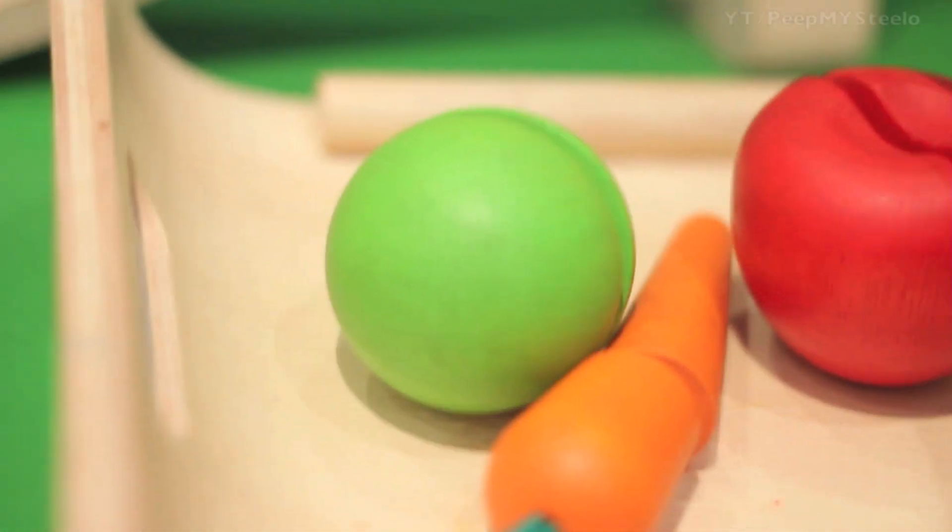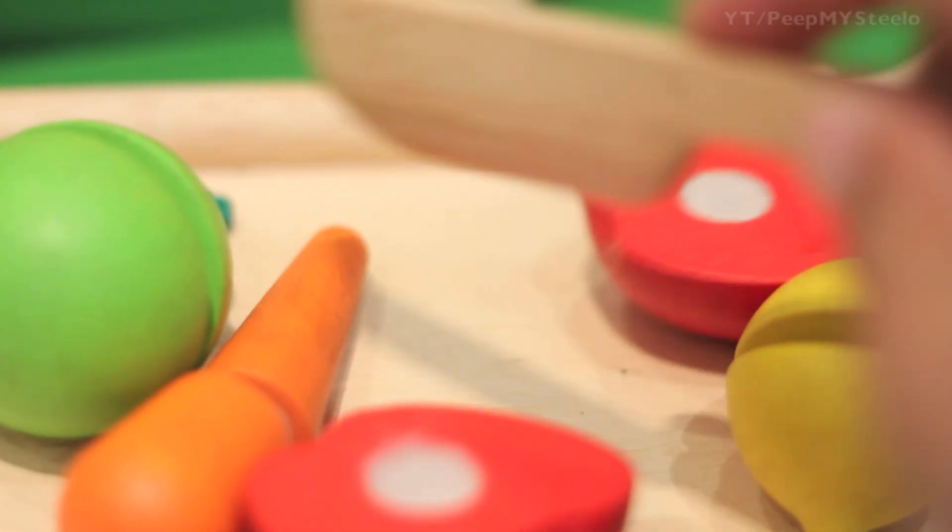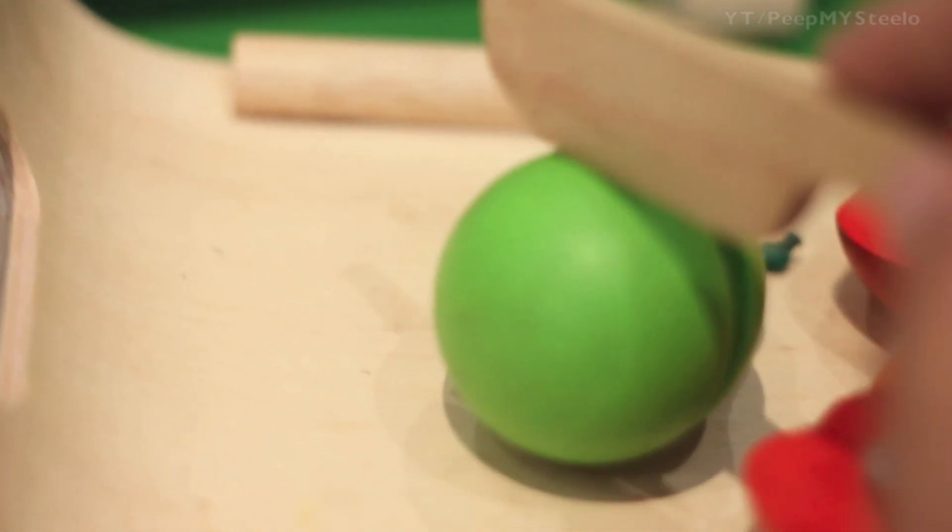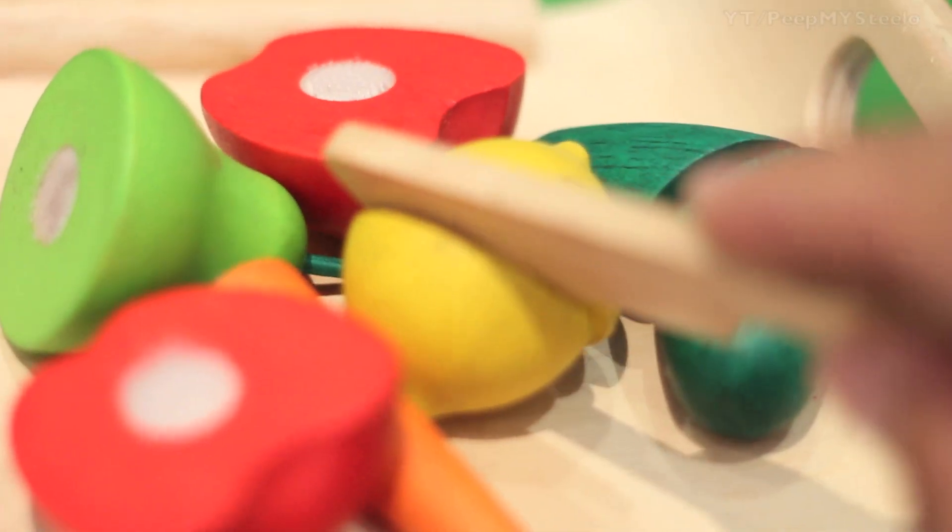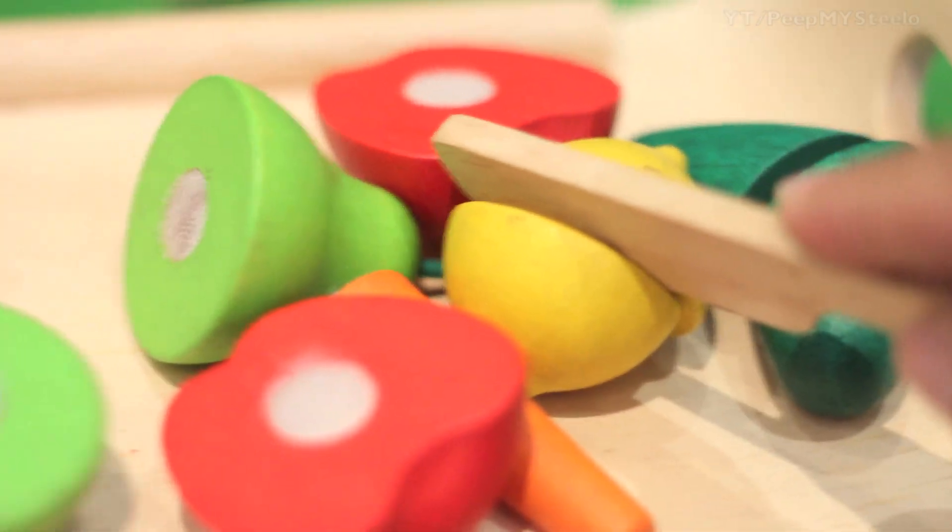It has velcro in the middle and comes with a wooden knife that can cut the velcro as you can see there. Kids love doing this and it's a nice sound as you can hear. It's kind of like make-believe of cutting real vegetables.